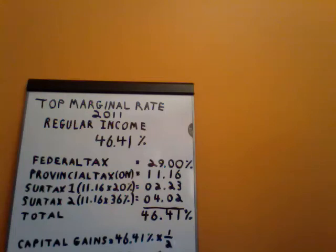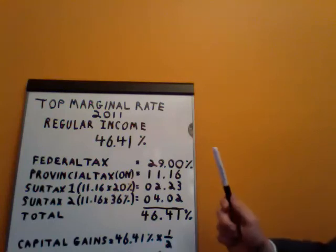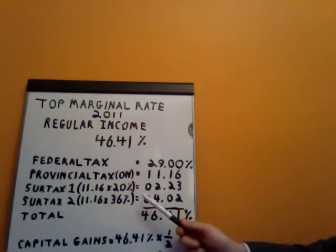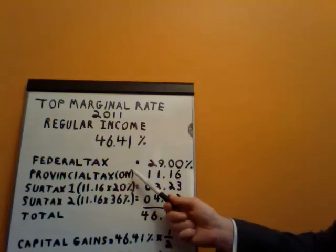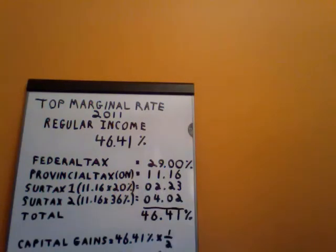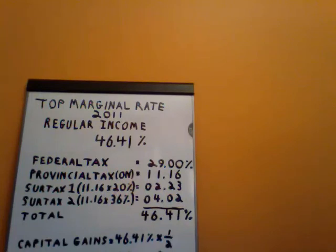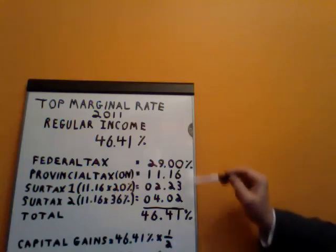Then we have another surtax. This kicks in when we have earned $78,361. For every additional provincial tax dollar paid in excess of $78,361, you would have to pay 36% of that amount. That would work out to an additional 4.02%.